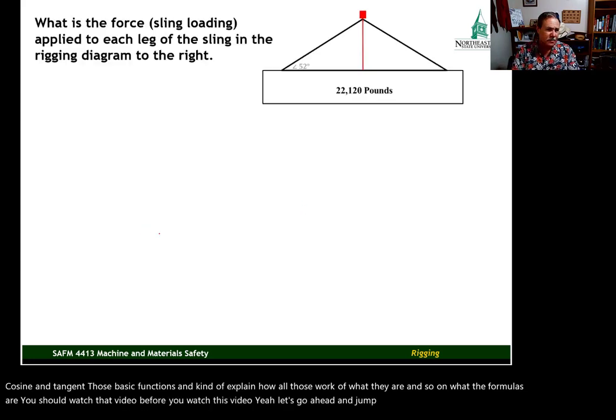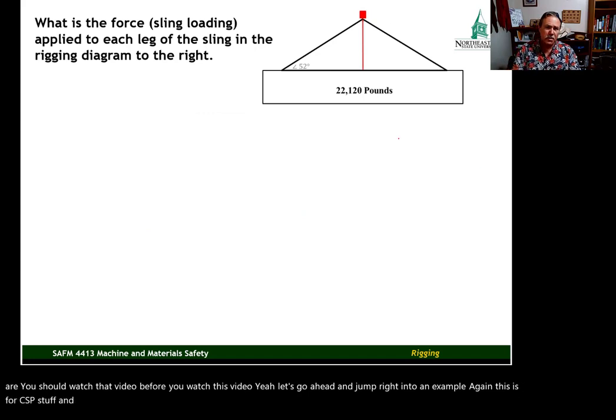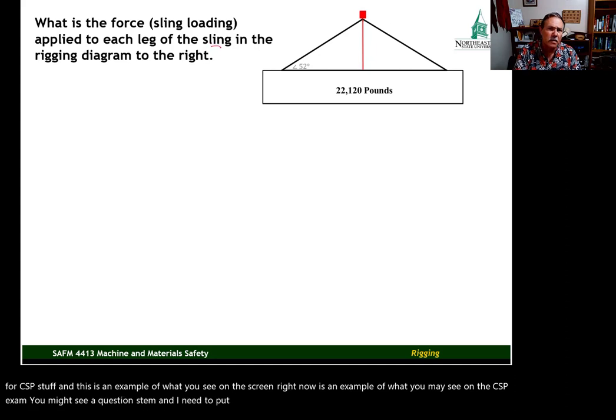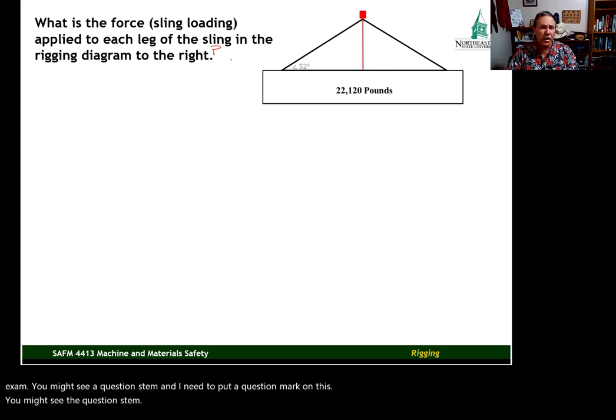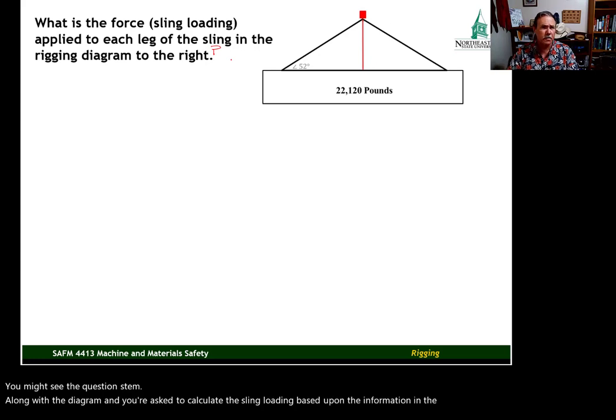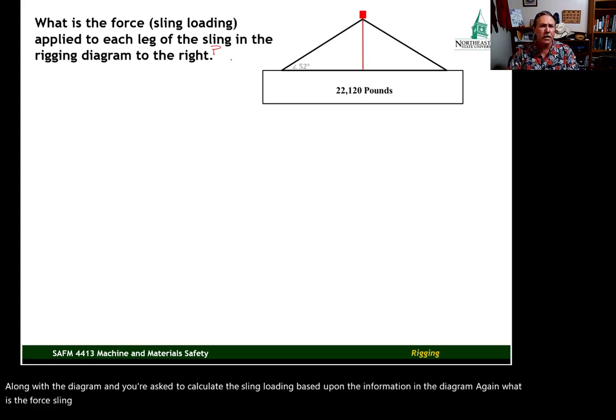Okay, let's go ahead and jump right into an example. Again, this is for CSP stuff. And this is an example. What you see on the screen right now is an example of what you may see on the CSP exam. You might see a question stem. And I need to put a question mark on this. You might see the question stem along with the diagram. And you're asked to calculate the sling loading based upon the information in the diagram. Again, what is the force, sling loading, applied to each leg of the sling in the rigging diagram to the right?